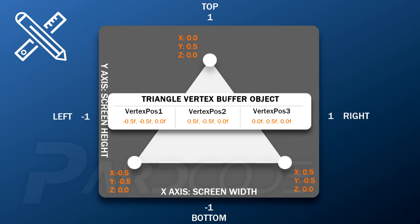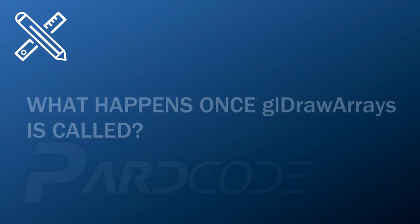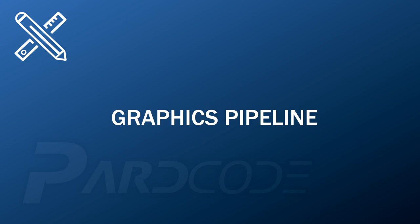We have now understood the meaning of the values shown in the representation of the triangle vertex buffer object. We just need to call the glDrawArrays function to render the triangle. But what happens once the draw function is called? A sequence of steps called the graphics pipeline is executed, usually in parallel, on the GPU.